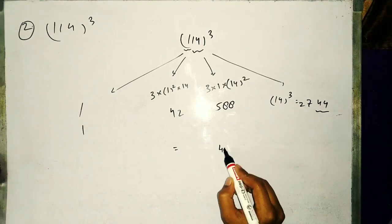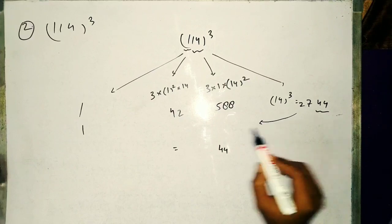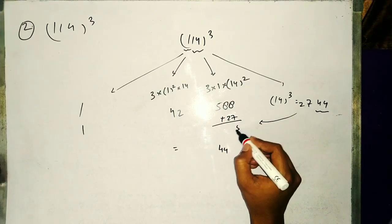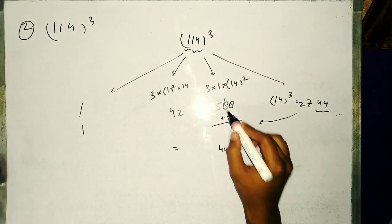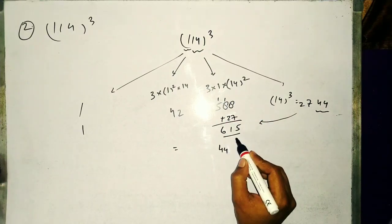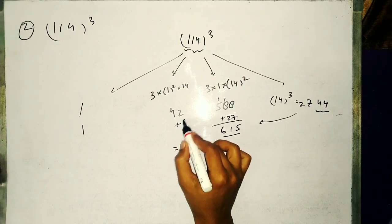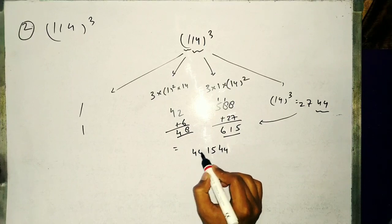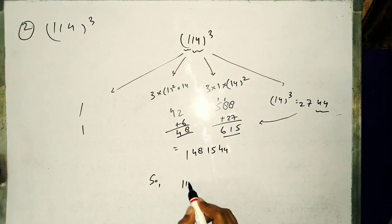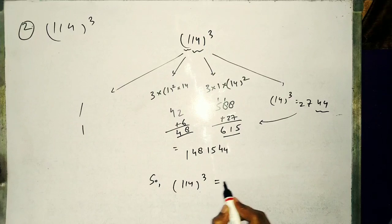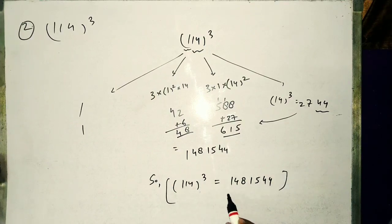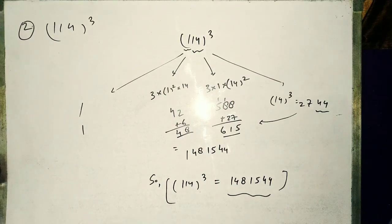Here we have taken two digits. Similarly, as previous case, we will take two digits: 44, carry forward 27, add. 1615, carry forward 6. 848, right 48 and 1. So 114 cube is equals to 1481544.